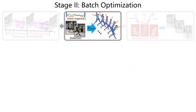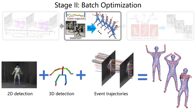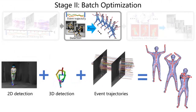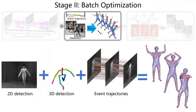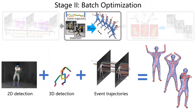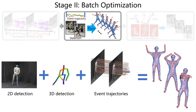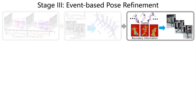Second, we formulate the motion capture as a batch optimization problem, where we jointly optimize for all the tracking frames in a batch. We fit the skeletal motion to the event trajectories in a batch, as well as to the CNN-based body keypoint detections from the low frame rate intensity images.